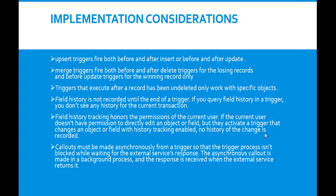Field history is not recorded until the end of a trigger, so if you query field history in a trigger, you will not see any history for the current transaction. Field history tracking honors the permissions of the current user — if the current user does not have permission to directly edit an object or field, but they activate a trigger that changes that object or field with history tracking enabled, no history of the change is recorded. Callouts must be made asynchronously from a trigger, because the trigger process is not blocked while waiting for an external service response; the asynchronous callout is made in a background process.